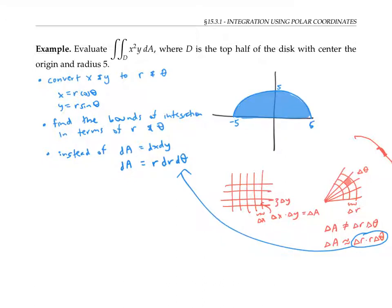Now that we've outlined the setup, let's go ahead and compute this integral. First, we'll convert the x squared y that we're integrating into polar coordinates. So x is r cosine theta, and y is r sine theta. So that simplifies to r cubed cosine squared theta sine theta.